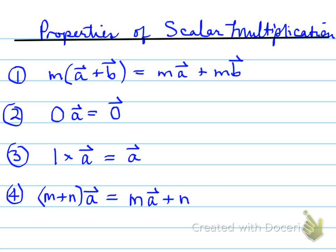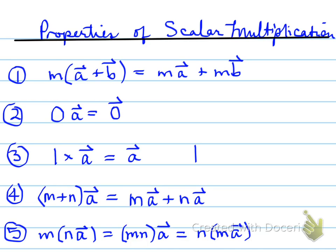M plus n times vector a equals m times vector a plus n times vector a. And finally, number five, m times n vector a equals mn times vector a, or n times ma. Looking back at example number three, that is the same as saying 1 times vector a is equivalent to vector a.